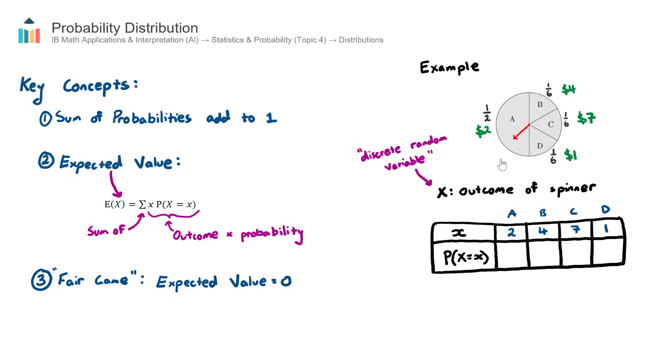Just to recap, we had a discrete random variable, which is the outcome of the spinner. Now this lowercase x here is all the possible outcomes of this variable. And the outcomes are 2, 4, 7, 1. So that's the first row of our probability distribution. This right here is our probability distribution table for this particular example. Now the second row, and what's going on here with this notation, this reads the probability of a particular outcome.